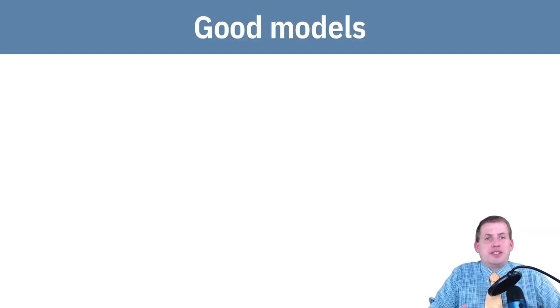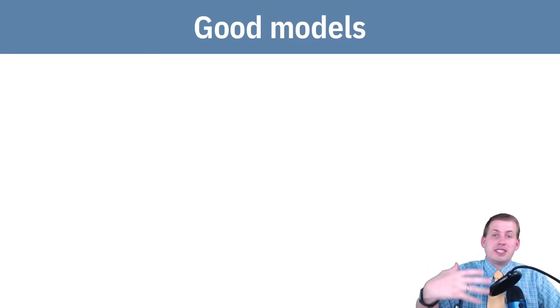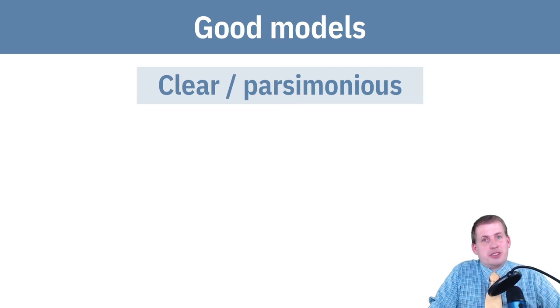A good model, whether it be a statistical model, economic model, a mental model for how something works, any sort of model. If it's good, if it's clear and if it's parsimonious, parsimonious means it just has like the fewest moving parts that make it still understandable.